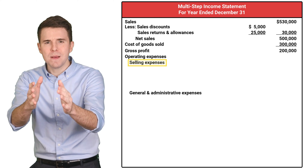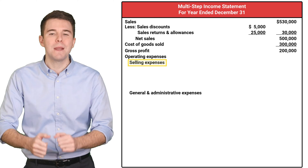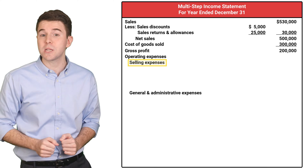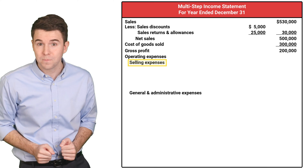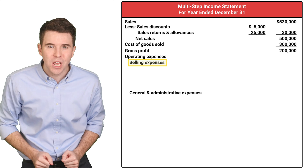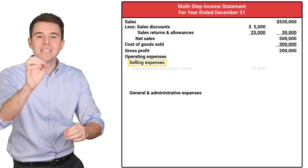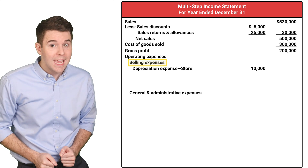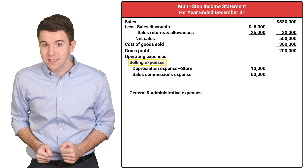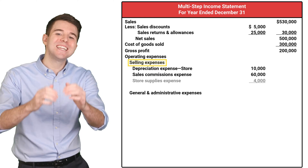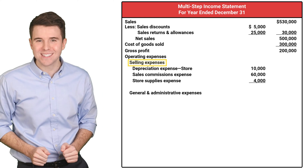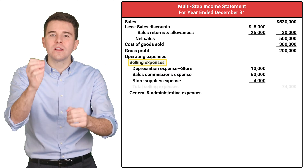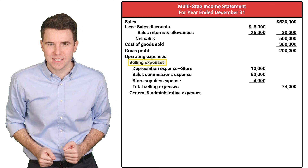Selling expenses refer to expenses involved in marketing and distributing services and products. In our multi-step income statement, we list depreciation expense on our store, sales commissions expense, and store supplies expense. Adding these together gets us total selling expenses.